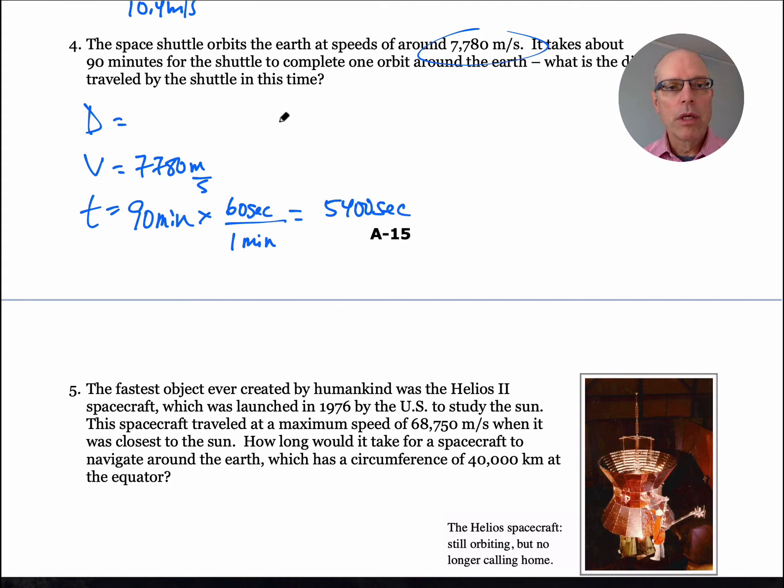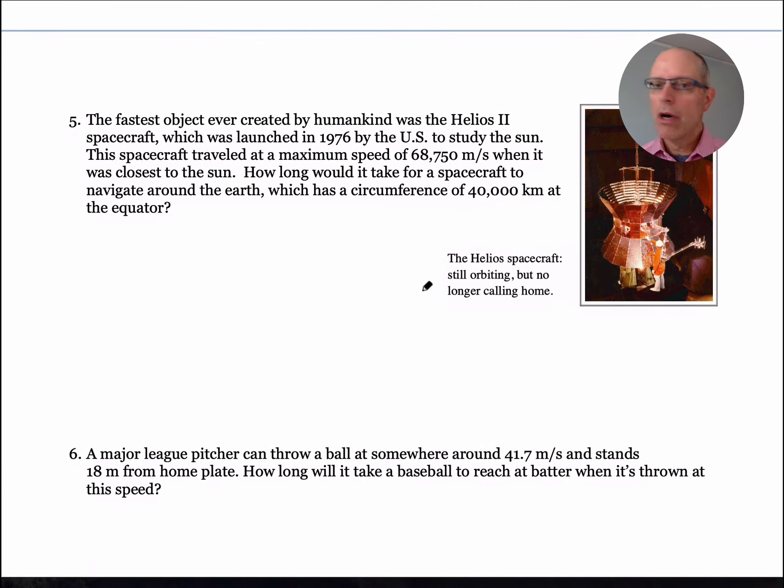Then we're done with the list. The equation is D equals V times T. Don't need to do any algebra, so we just jump right to the plug-in stage. 7,780 meters per second times 5,400 seconds, and that's going to be a walloping 42,012,000 meters is the distance the space shuttle would go. So the first four are done. If you're setting them up right and feeling confident, you're probably on the right track.